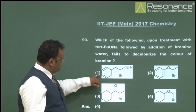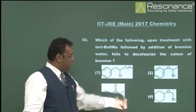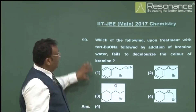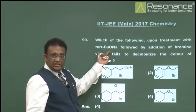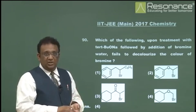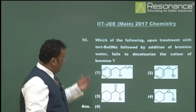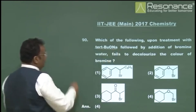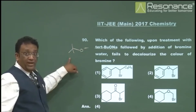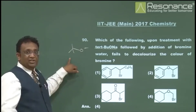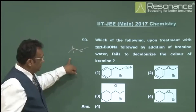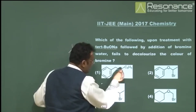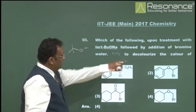Tertiary butoxide is a powerful bulky base that favors elimination over substitution when there is competition. Substrate 1 has Br at a benzylic position — treatment with tertiary butoxide gives elimination, producing an alkene. That alkene would decolorize bromine water, so this is not the answer we're looking for.